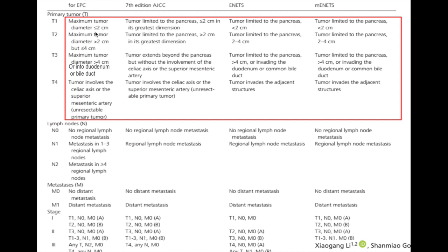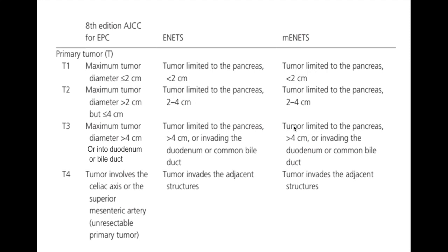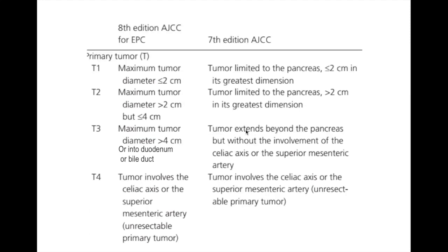For T-staging, the breakdown is basically just by size. T1 is less than 2 centimeters, T2 is 2 to 4, and T3 is greater than 4 centimeters or into the duodenum or bile duct. T4 is vascular invasion — into the celiac or SMA — basically unresectable. The 7th edition used to say 'tumor extends beyond the pancreas' made it a T3, with no 4-centimeter cutoff. Extra-pancreatic invasion is no longer in the new staging — apparently that was too variable by the pathologist, so they took it out. T4 remains unresectable because of vascular invasion.